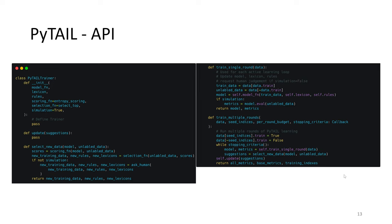The PyTL API is simple and consists of the PyTL trainer, where you define your model function, your initial lexicon and rules, and your scoring and selection functions. You can also choose whether to run in simulation mode or human-in-the-loop mode. Once defined, these are used to train for multiple rounds — beneficial for simulation mode — or a single round for human-in-the-loop mode. You can also define functions for how new updates should be generated, how suggestions should be processed, and how new data and lexicons should be created.